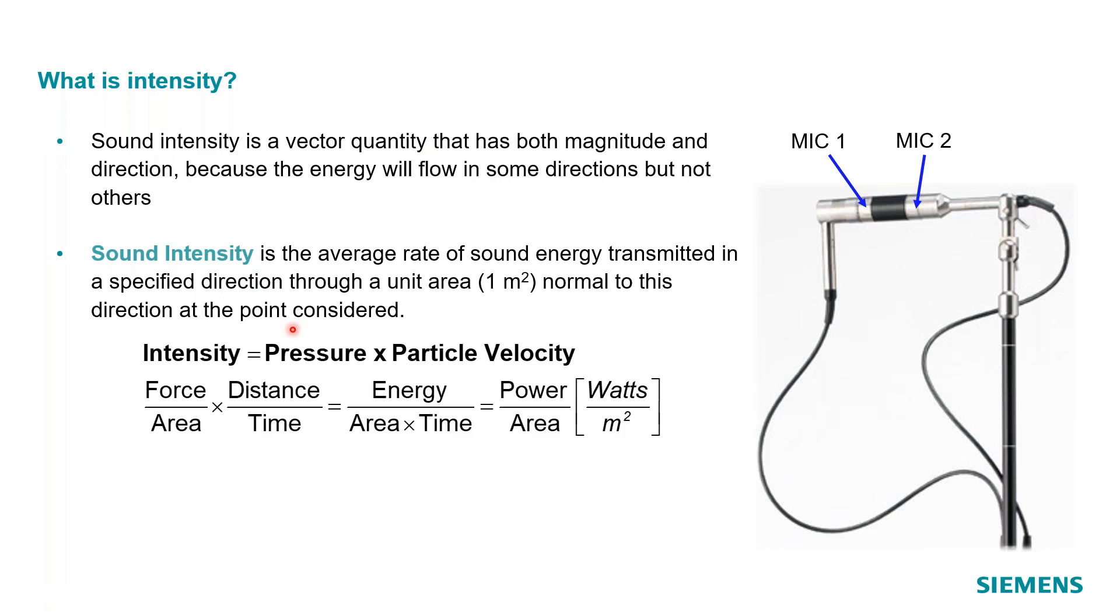And intensity is really just the sound pressure multiplied by the particle velocity. If you do the units carried out, you end up with a watts per meter squared. And if you remember on that last slide, my sound power was also in units of watts. And so there's a link between sound intensity and sound power. And so we'll talk about that in just a little bit as well. But a useful side effect of sound intensity is sound power.